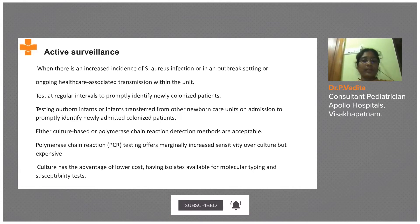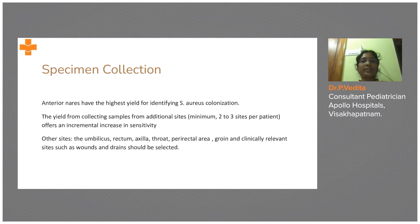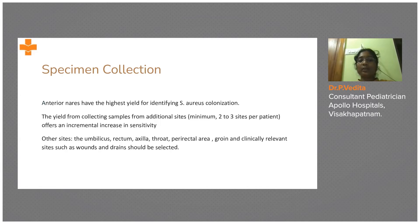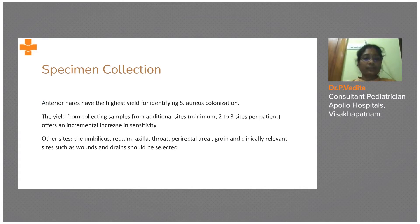For specimens in active surveillance, the anterior nares give the highest yield, so collect from there first. You can also use additional sites — collecting from two to three sites per patient increases sensitivity. Other sites include umbilicus, rectum, axilla, throat, perirectal area, groin, and any clinically relevant wounds or drains. Culturing from multiple sites gives better sensitivity.